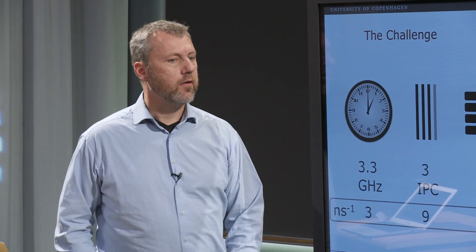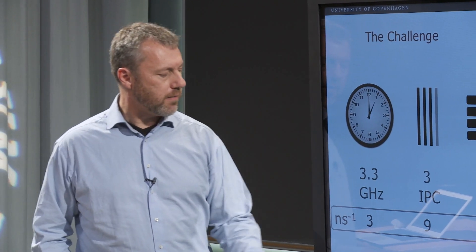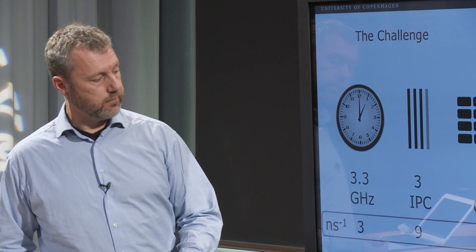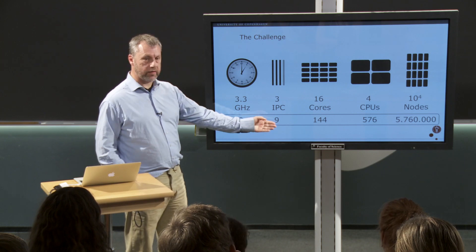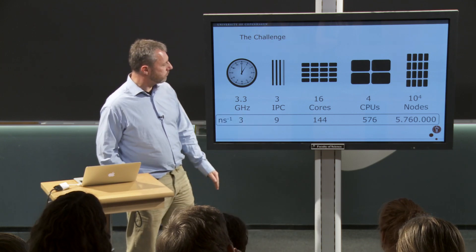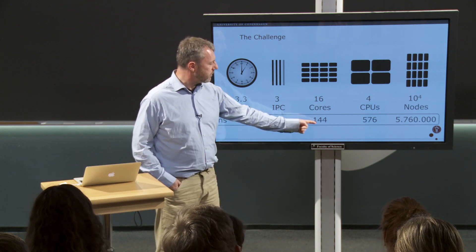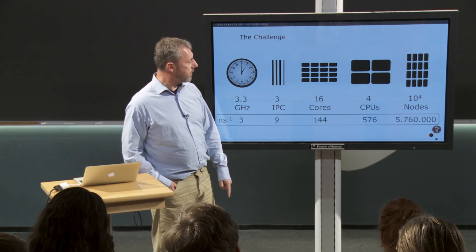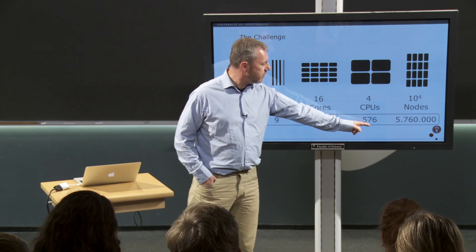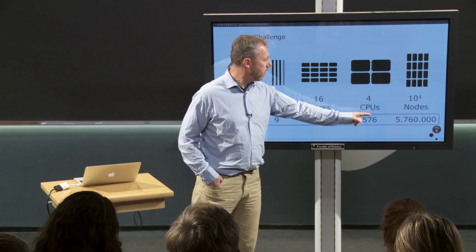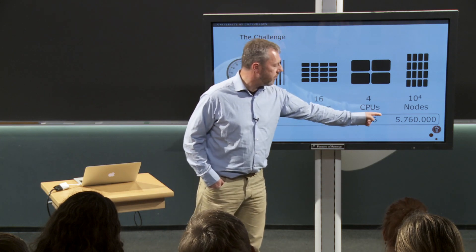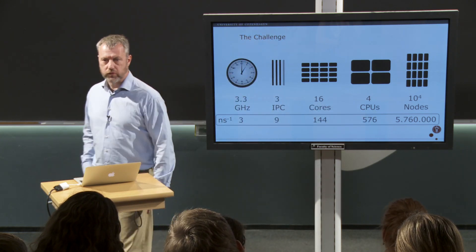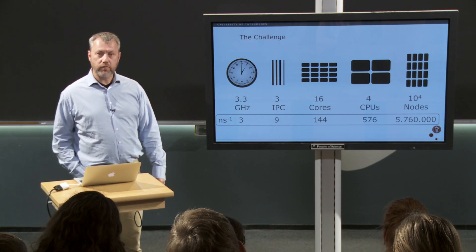If we sum that up: for every nanosecond we get about 3 clock cycles, each of which produces 3 computations, so we're at 9 computations per nanosecond. With 16 cores, that brings us to 144 computations per nanosecond per CPU, and 576 computations per computer per nanosecond. With 10,000 such computers, you end up at 5.7 million instructions per nanosecond. A nanosecond is 10 to the minus 9th of a second.